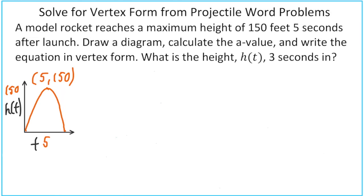Now we're ready to go ahead and write out our vertex form. Notice, though, that we don't know what the a value is. So for now, we can just put a. But we can write the rest because we know our vertex is 5, 150. So the question is, how do we solve for our a value?